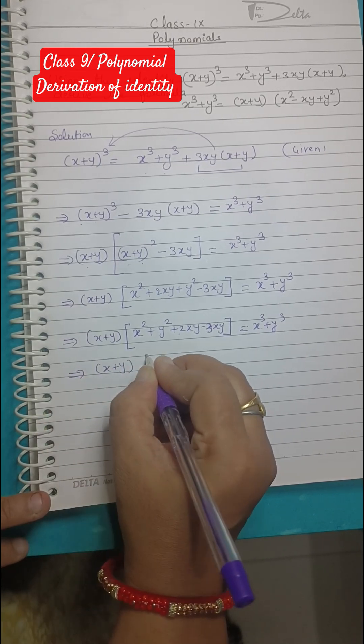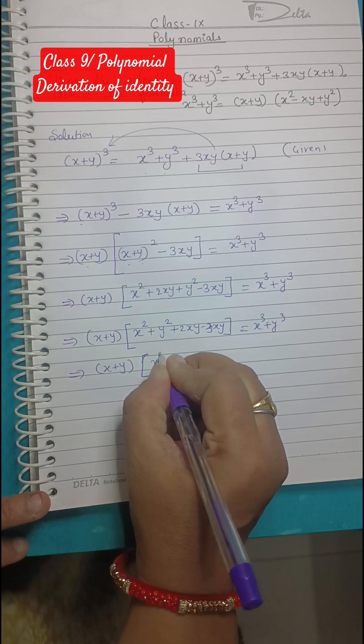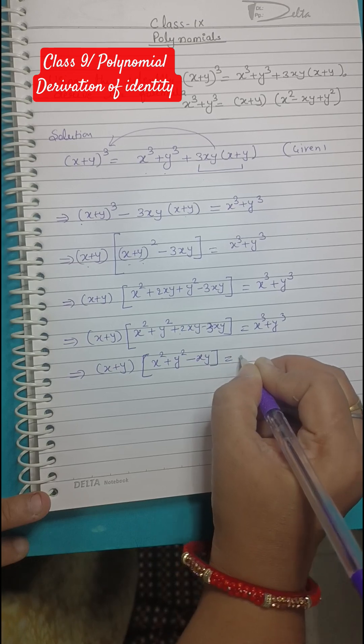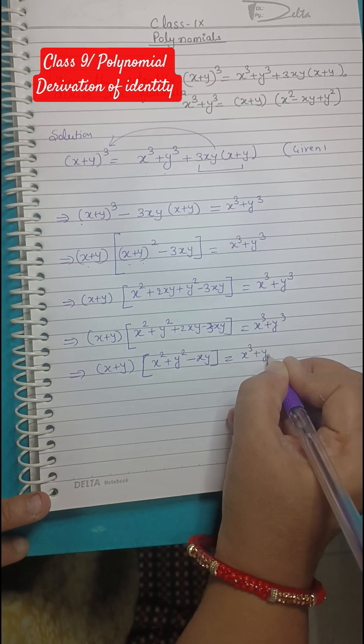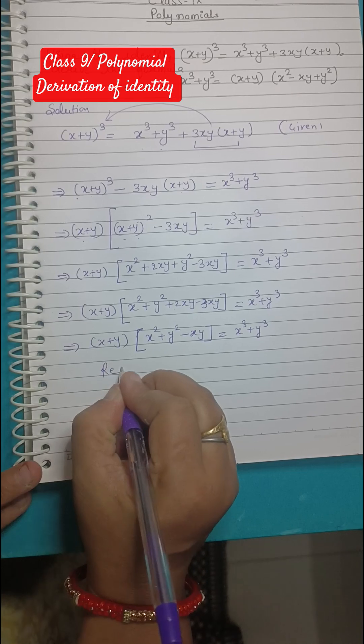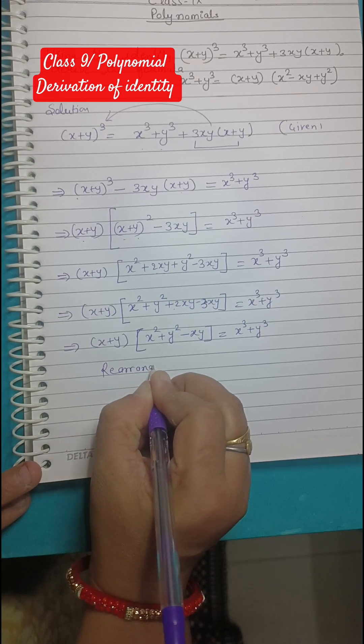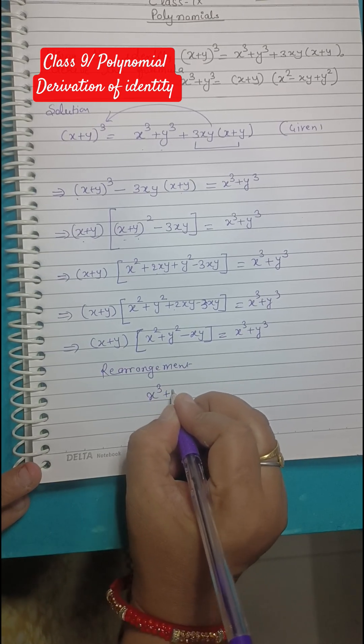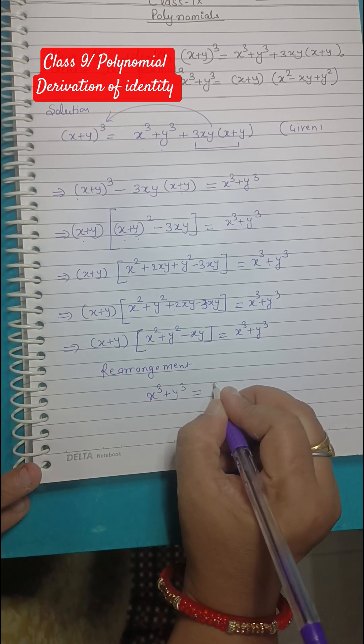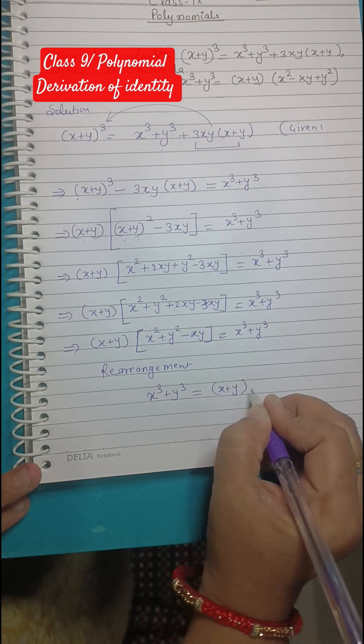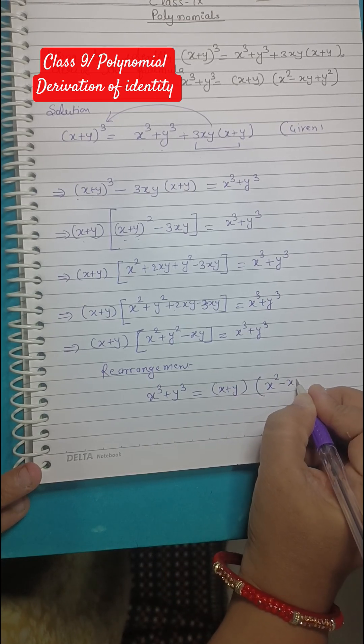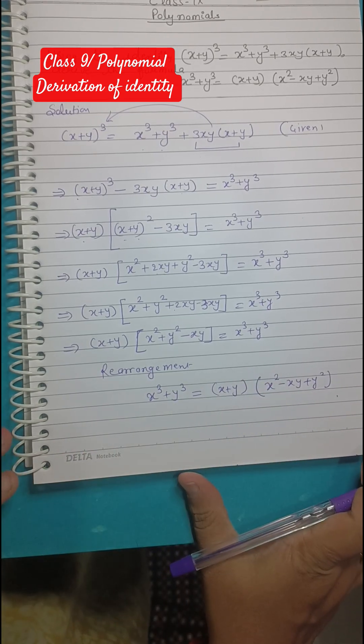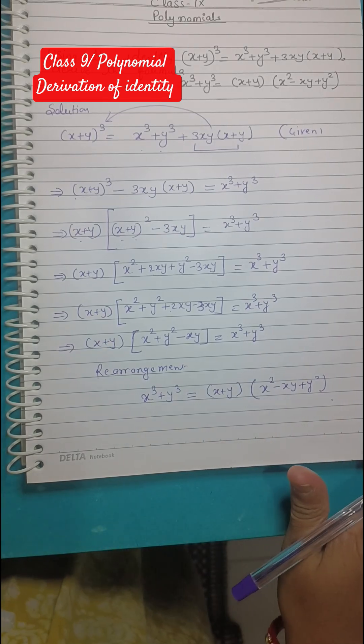Just rearrange the terms, and after the rearrangement we got what we need to prove. That is x³ + y³ = (x+y)(x² - xy + y²). See how easy this derivation was? Looks complicated but very easy.